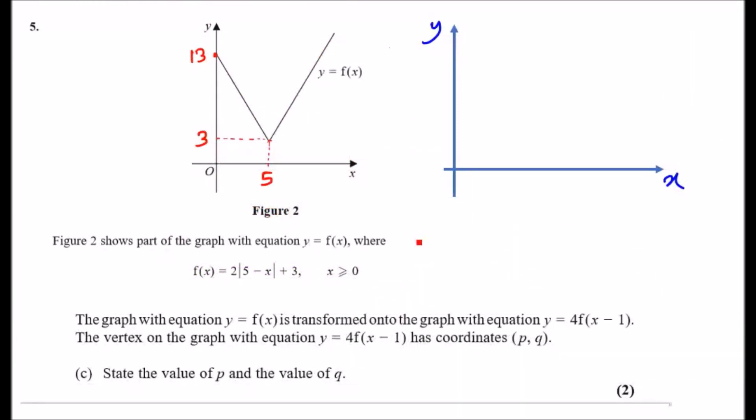Part c. So what do we have? The graph of equation y equals f(x) is transformed onto the graph of equation y equals four times the function of x minus one. And the vertex in the graph of equation four, the same thing has corners p and q. This is talking about the vertex as in here, so this is the vertex pq, but of course we need to find it for the new graph. State the value of p and the value of q. This is just transformations.